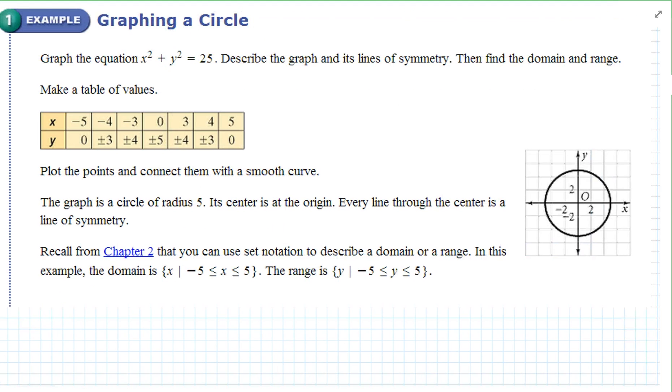Graphing a circle. Graph the equation x squared plus y squared equals 25. Describe the graph and its lines of symmetry and then find the domain and range. Well, start with x equals negative 5. Plug it in. You get y equals zero. When x equals negative four, plug it in. You get y equals plus or minus three. So on and so forth.